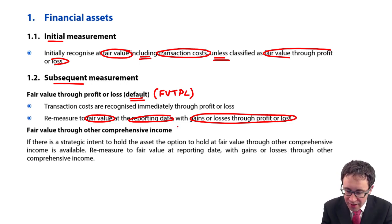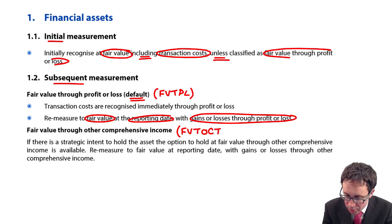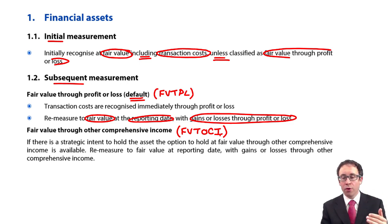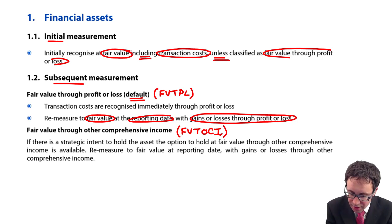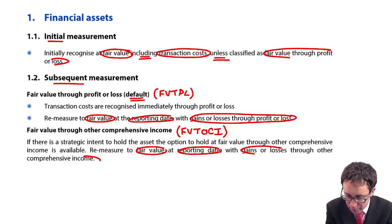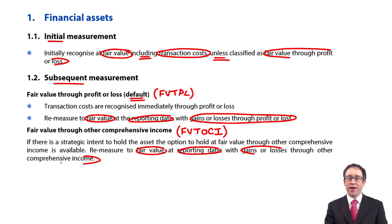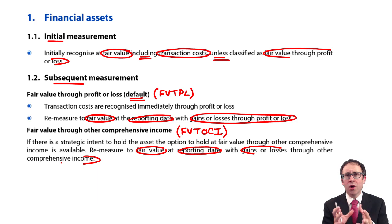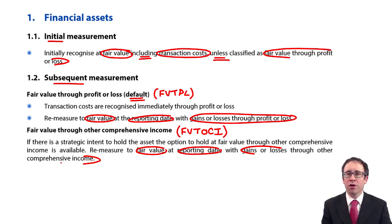The other alternative is fair value through other comprehensive income — FVTOCI for short. You remeasure to fair value at each reporting date and gains and losses go to other comprehensive income. A fair value through other comprehensive income financial asset investment in equity shares means that you bought those shares not with the intent to trade them and sell them in the short term, which is the default fair value through profit or loss category.